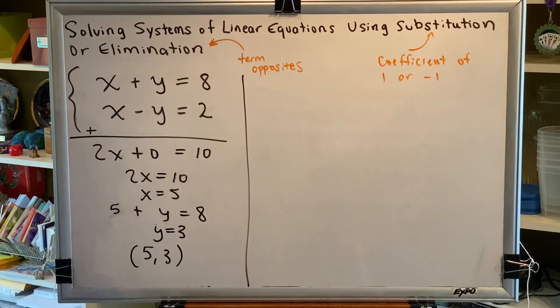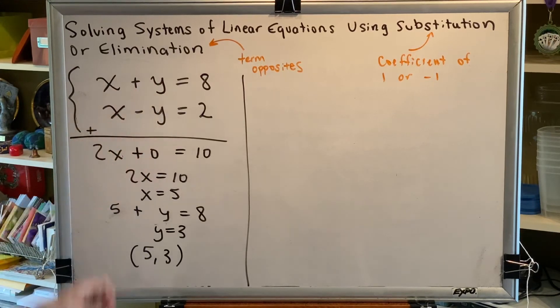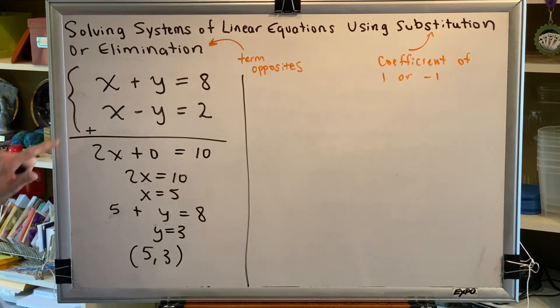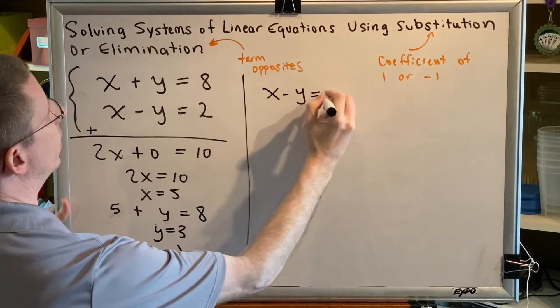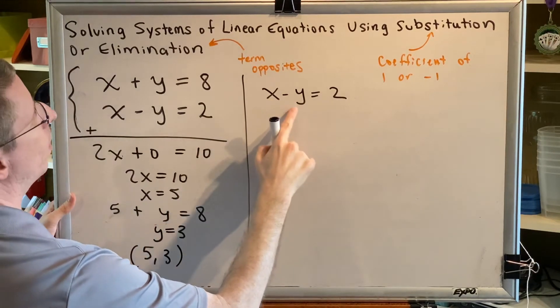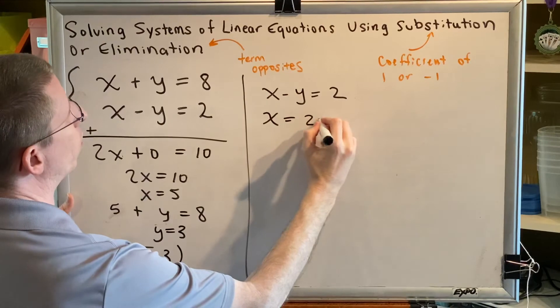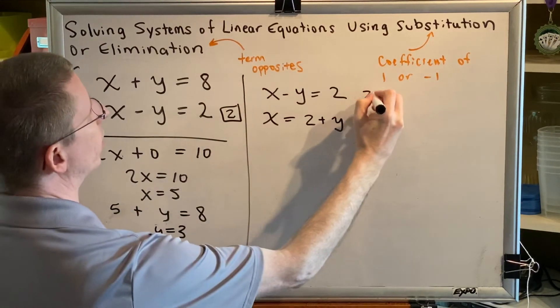Alright, now we'll use the substitution method. Any one of these variables could be solved for, but I recommend solving for one that has a positive coefficient if you ever have a choice. So let's go ahead and use this bottom equation and try to solve it for x since this x has a positive one for its coefficient. Move the y to the other side and you get x equals 2 plus y. Now remember, this is equation 2 that we're dealing with.